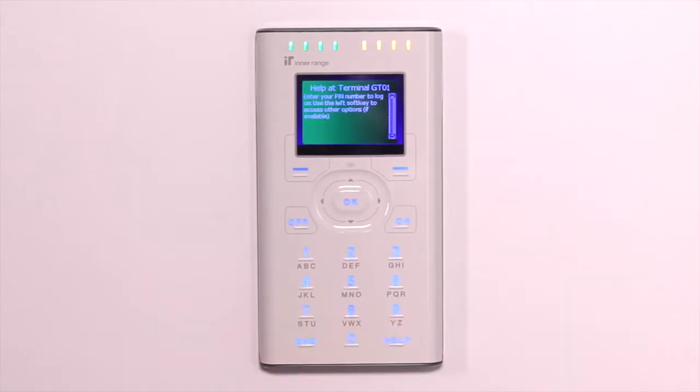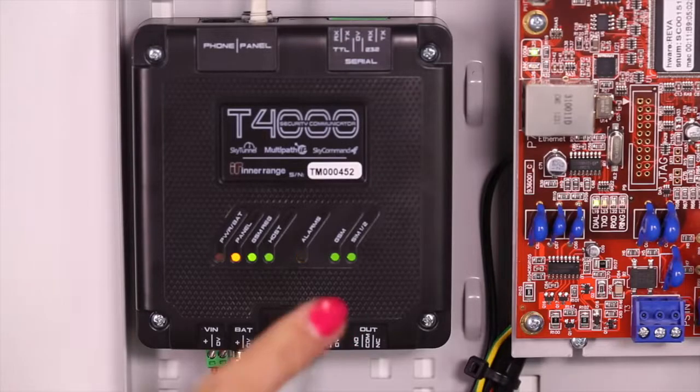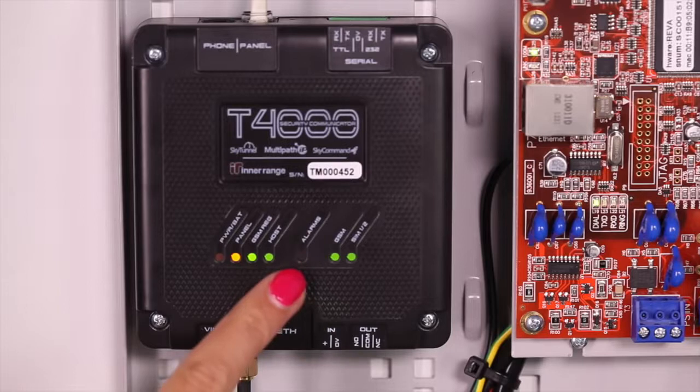Our T4000 is now fully enrolled and is ready to test. The best way to test your T4000 is to generate an alarm event and then call your monitoring station to verify that it has been received. Once you've generated an alarm event, pay attention to the alarms LED. When this LED lights up, it indicates that the T4000 has successfully received an alarm from the alarm panel. The alarms LED will turn off once the alarm has been successfully sent to the monitoring center.